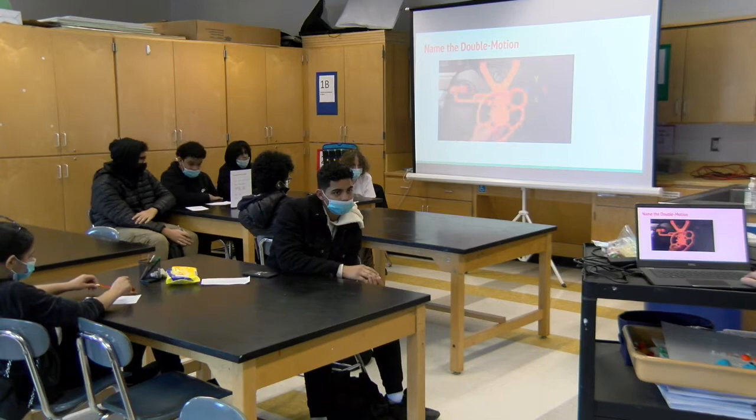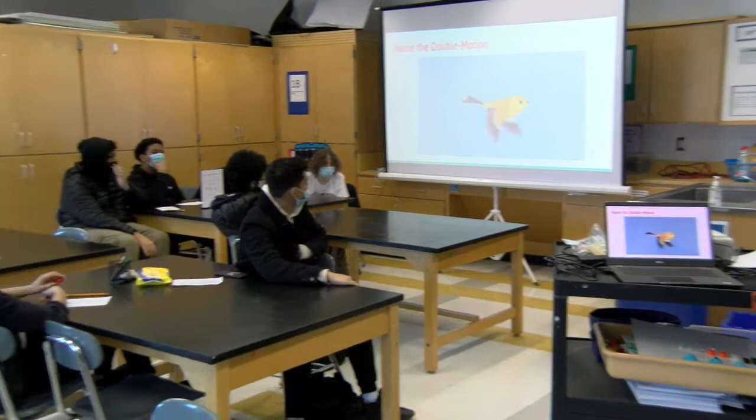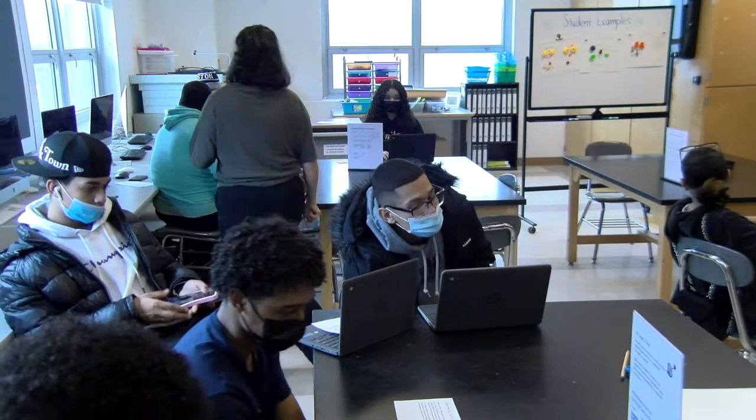Here's a bird. Give me two motions. Linear and oscillating. Linear and oscillating. So what's oscillating? The wings are going back and forth. So the wings are oscillating and the bird is traveling — linear.